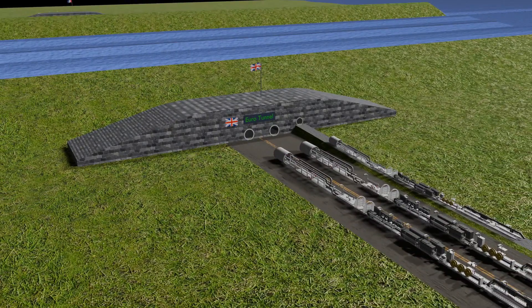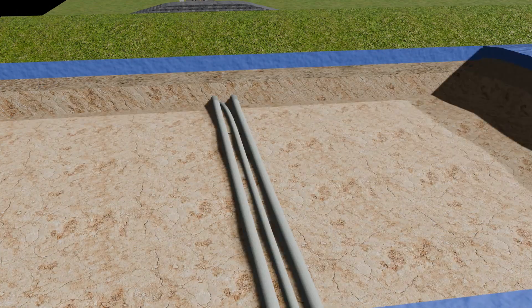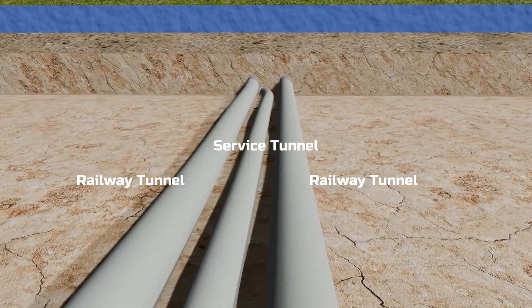Interestingly, three parallel tunnels were to be built simultaneously. Two railway tunnels and one service tunnel, all constructed together.